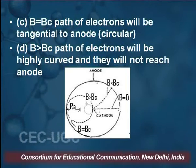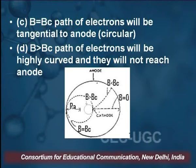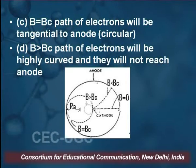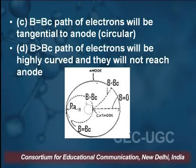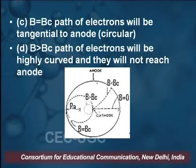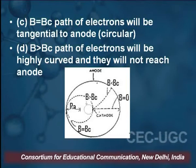In the fourth condition, B greater than Bc, the path of the electron will be highly curved and they will not reach towards the anode. B greater than Bc is not considered here. These are the four conditions where the magnetic field changes the path of the electron passing from cathode to the anode.